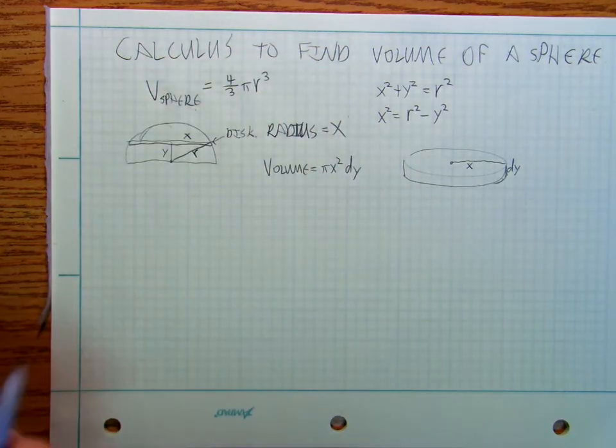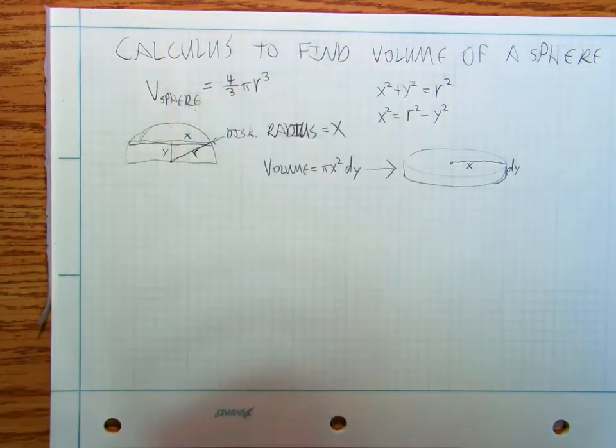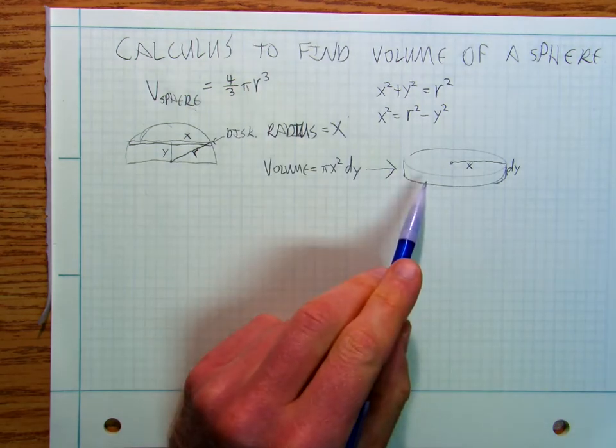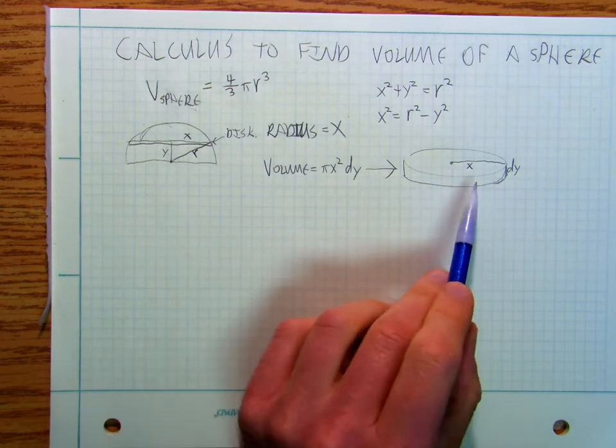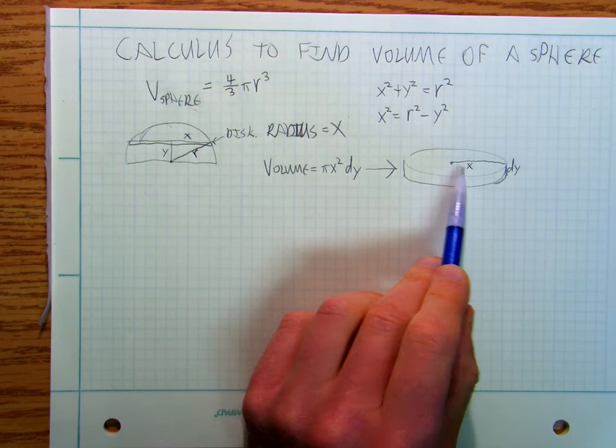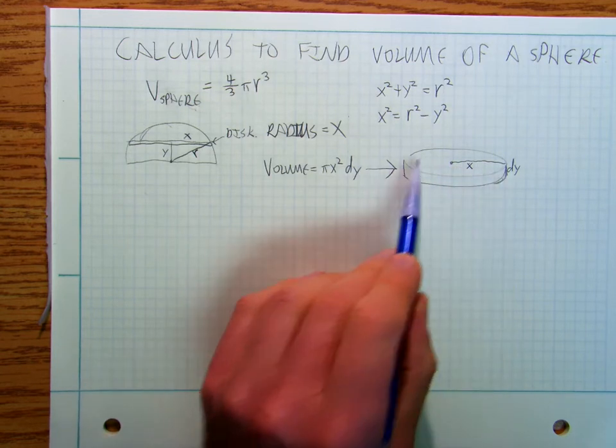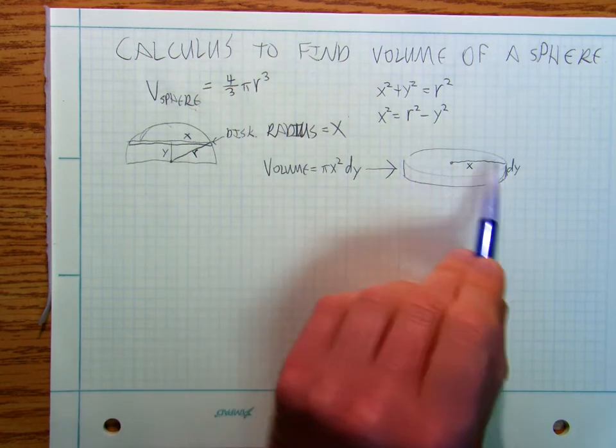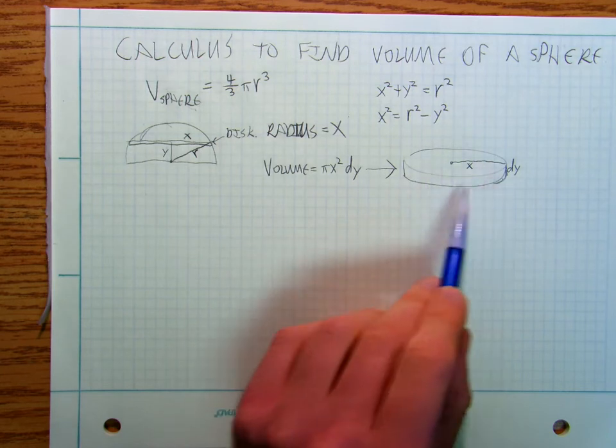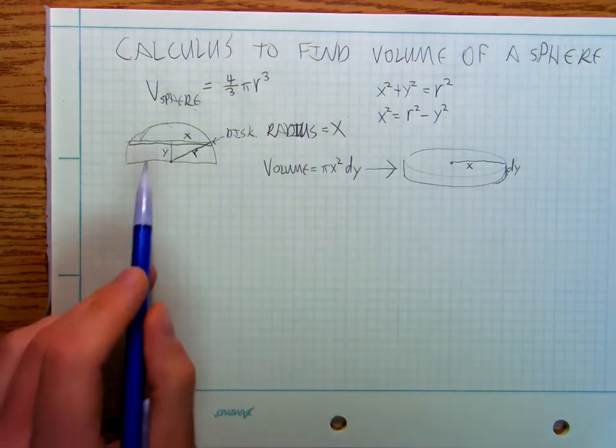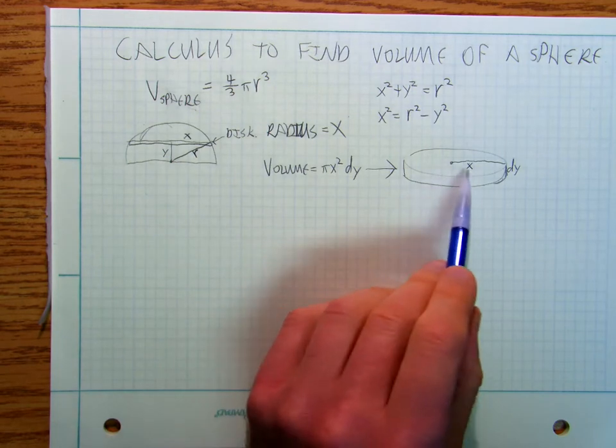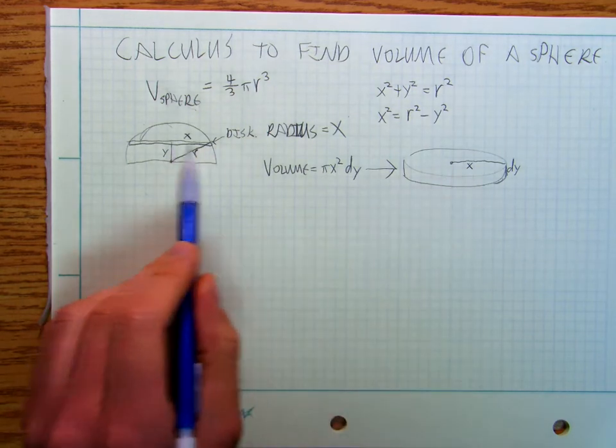Okay. I've got a little disk here that I've sort of, I've taken this disk and I've just sort of written it a little bit nicer. And it's got a radius of x. And so the area of that top of the disk is going to be Pi r squared. And in this case, r isn't the radius of the sphere, r is actually x, which is the radius of that disk.